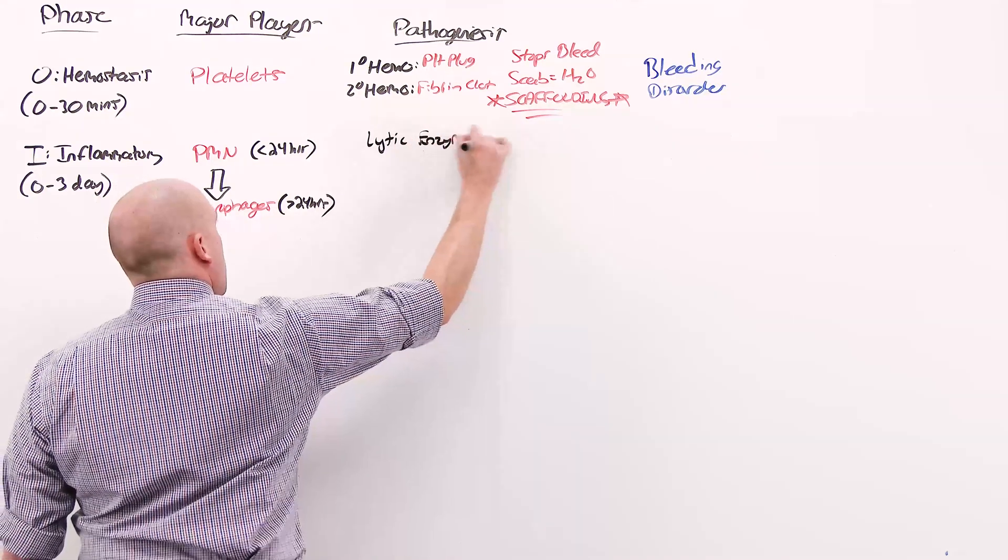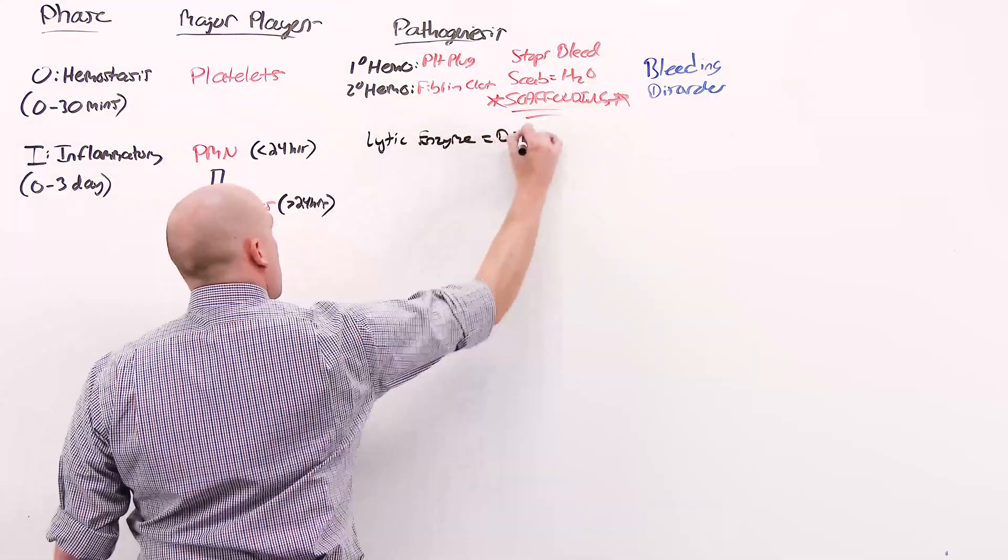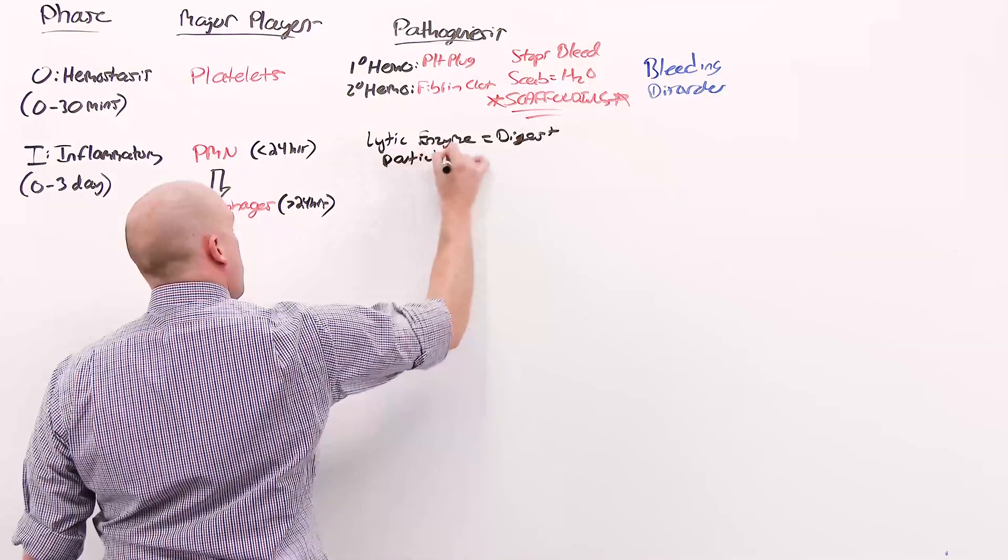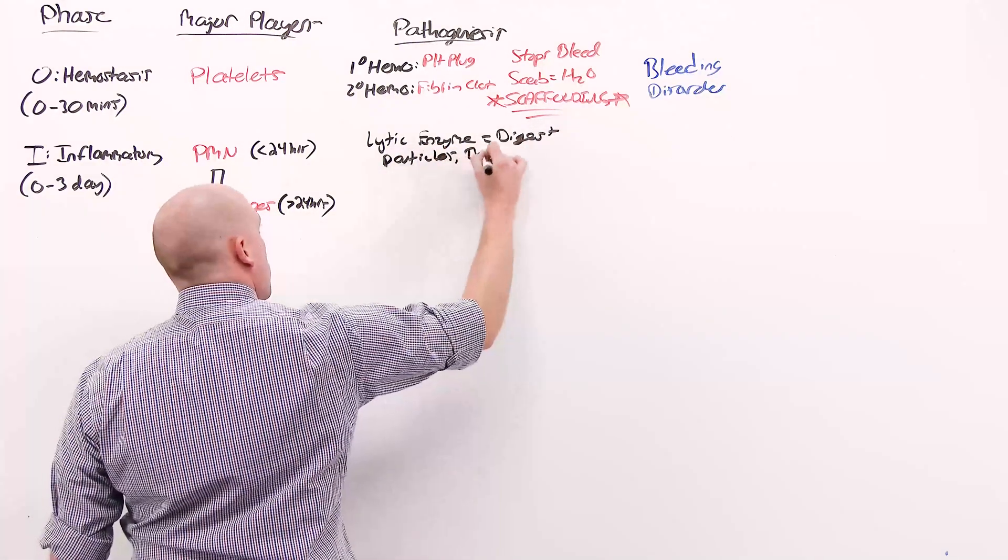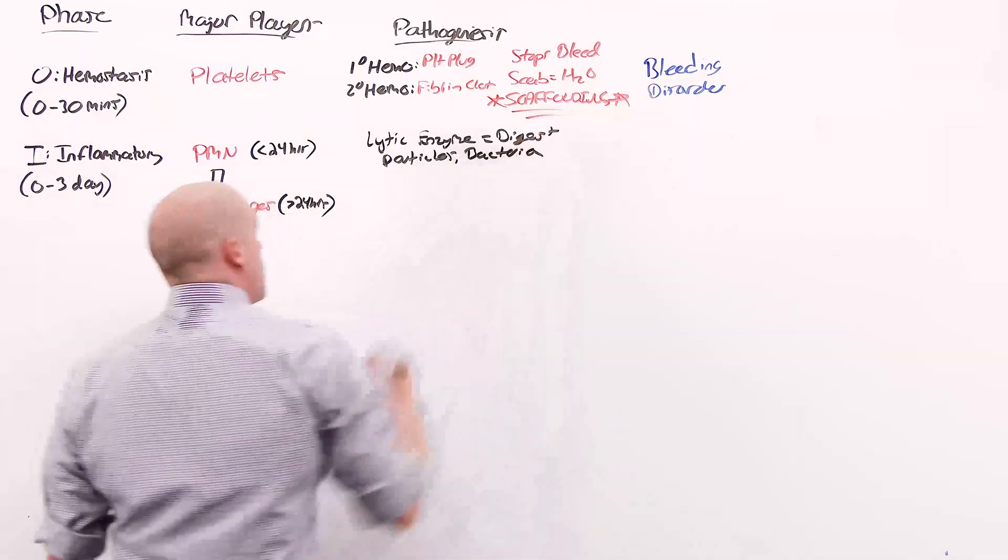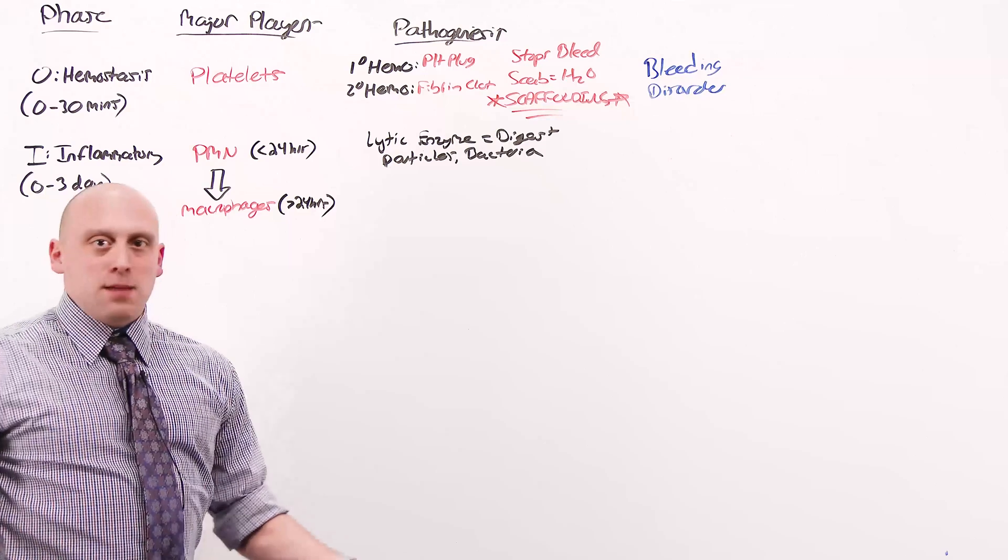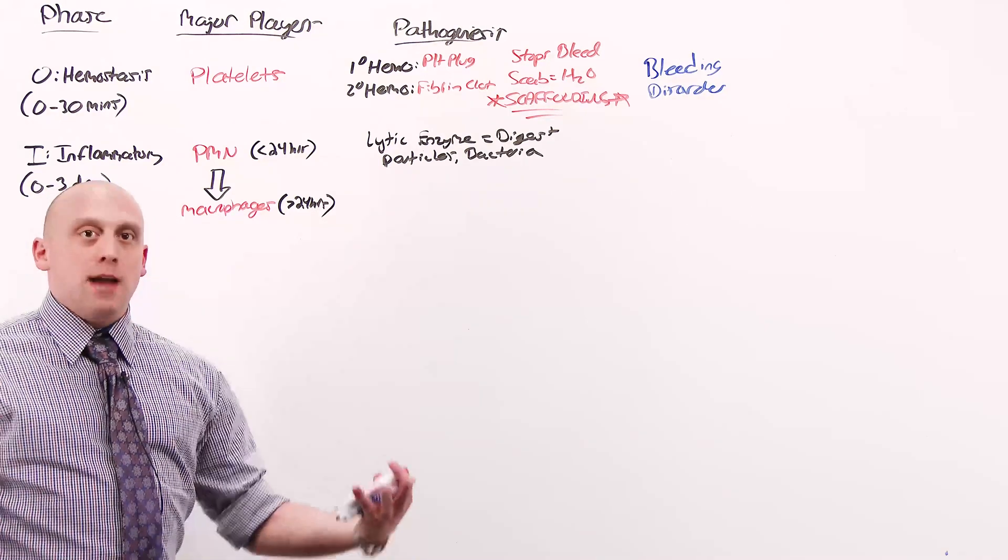They are going to digest any foreign particles or bacteria, foreign invaders. What they're really used for is the forward scouts. They exit and they marginate through the blood vessels first. They get to an area and say, yep, got a problem.